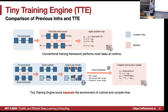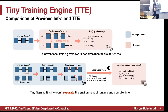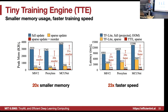This is a comparison with conventional training frameworks that perform most tasks at runtime — a lot of workload is at runtime, including auto-diff. But the Tiny Training Engine separates compile time and runtime, pushing a lot of workload to compile time — including sparse update, fusion, and reordering — to generate lightweight code. With the same accuracy, this achieves 20× smaller memory and 23× faster speed.